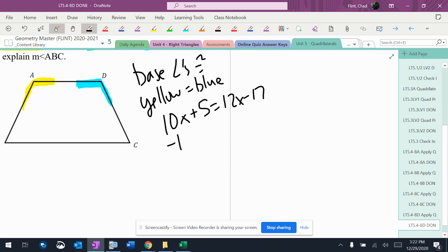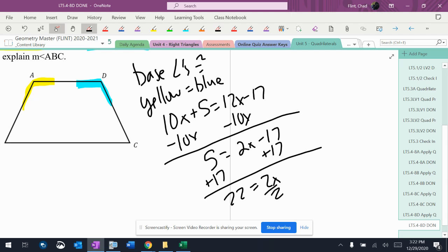Now I'll solve it. Minus 10x from both sides, 5 equals 2x minus 17. Plus 17, 22 equals 2x, so x is 11.